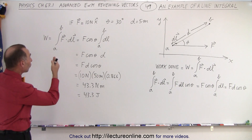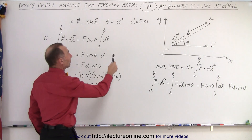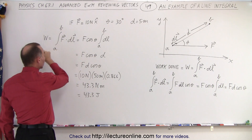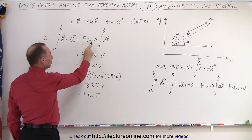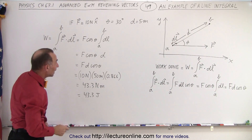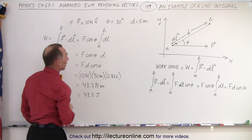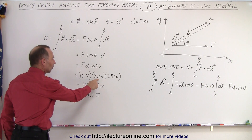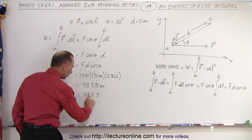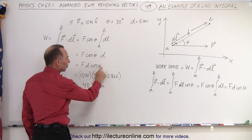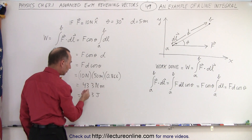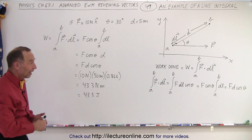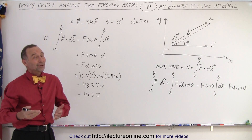Putting some numbers to that: if the force equals 10 newtons in the x direction, the distance traveled is 50 meters, and the angle is 30 degrees relative to the horizontal, then the work done — the integral of F dot dL — equals the magnitude of the force times the cosine of the angle times the length of the path. This becomes F times cosine of theta times D. With F = 10 newtons, displacement = 50 meters, and cosine of 30 degrees = 0.866, we get 10 times 50 times 0.866, which is 433 newton meters, or 433 joules. That's something most of us have probably encountered, and that is what we call a line integral.